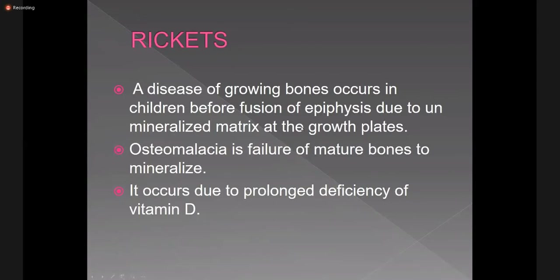Coming to rickets. In osteoporosis there was osteoclastic activity leading to decreased bone density and an imbalance between osteoclastic and osteoblastic activity. While in rickets there is unmineralized matrix due to deficiency or prolonged deficiency of vitamin D. When this happens in children it is called rickets, and when seen in adults it is called osteomalacia.